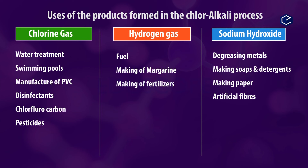Hydrogen Gas can be used as fuel and in the making of margarine and fertilizers. Sodium Hydroxide is used for degreasing metals, and in making soaps, detergents, paper, and artificial fibers.